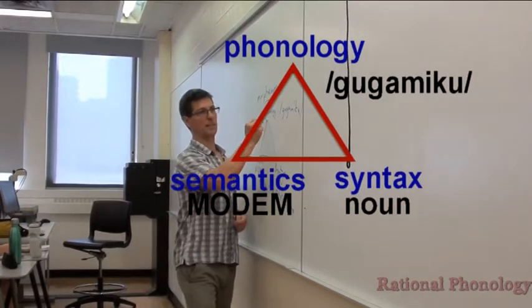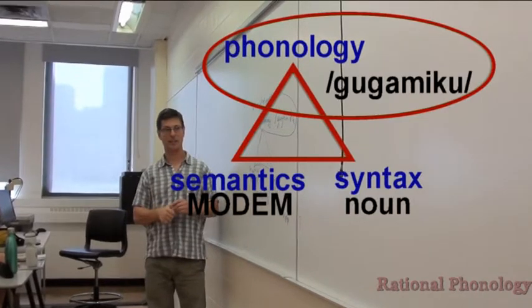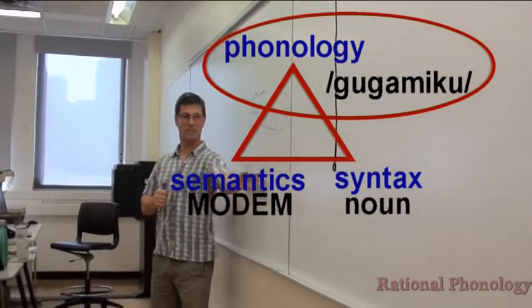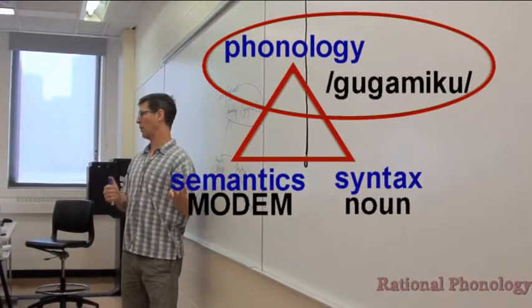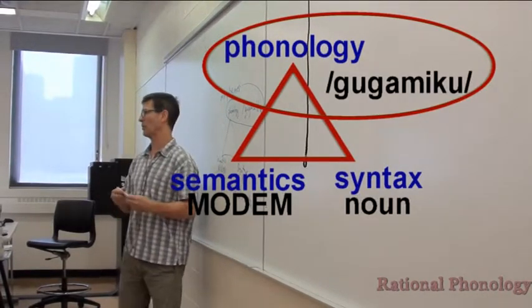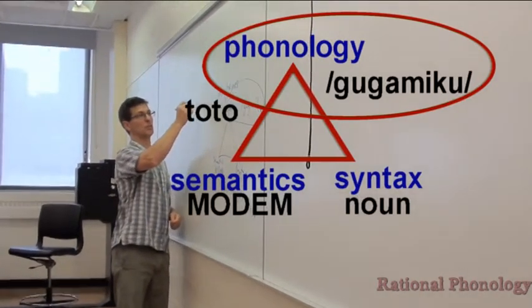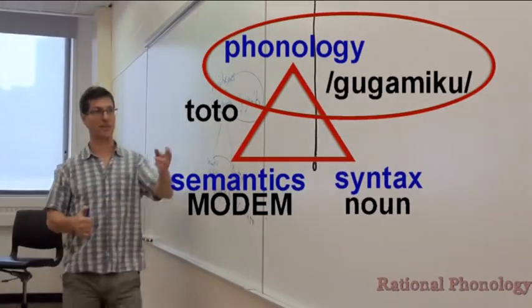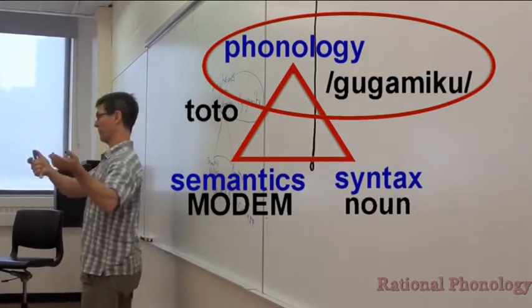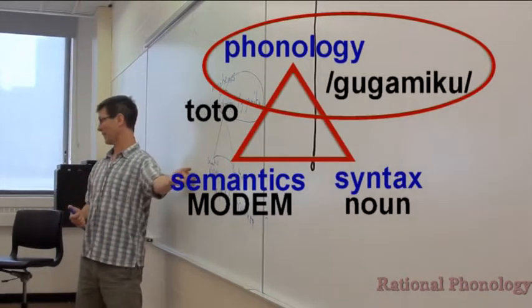So we really only care about this part, but we need to mention these others. When we refer to morphemes we don't want to list all this all the time, so we'll often say things like the morpheme toto in Swahili. We just use the phonological part to refer to the morpheme. But the morpheme is really the phonology and the semantics and the syntax.